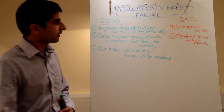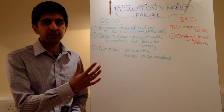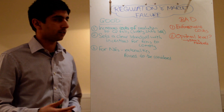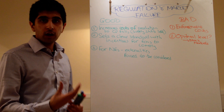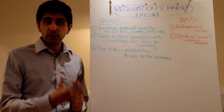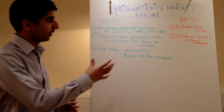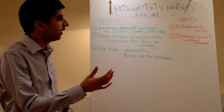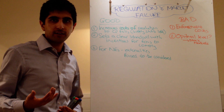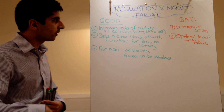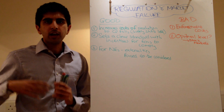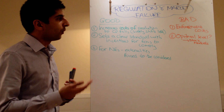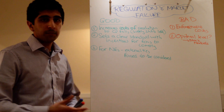Moving from indirect taxes to regulations — we realize some of the negatives of indirect taxes and why they might not work on their own to solve market failures, especially with negative externalities. Maybe regulation is a better way to do it. Regulation is simply governments prescribing rules and laws for firms and consumers to abide by.